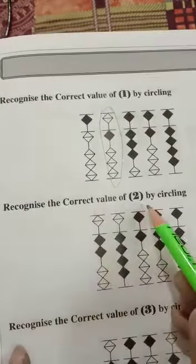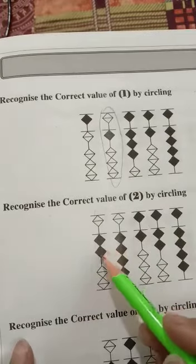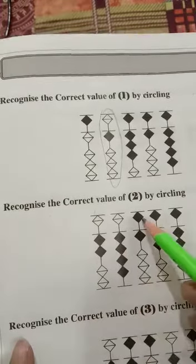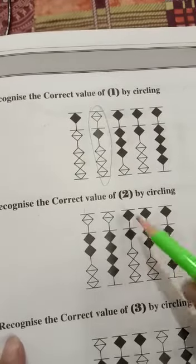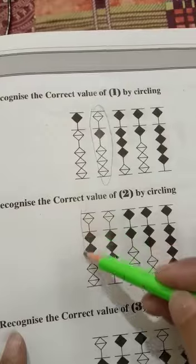Now the correct value of 2. That means where is 2? 2, 4, 5, 6, 5, 6, 7, 8, 9. Value of 2. That means here, now you circle.